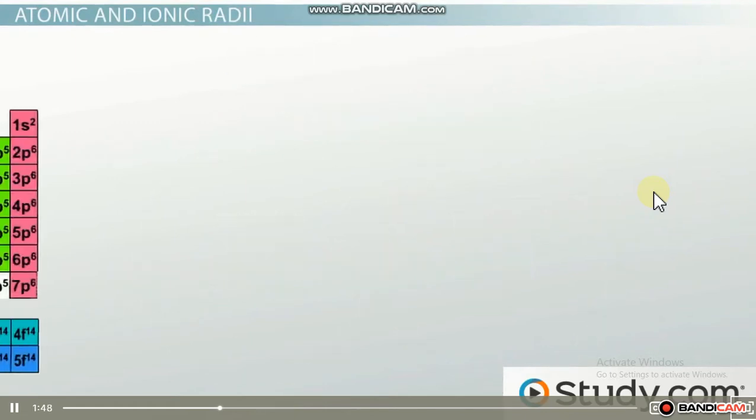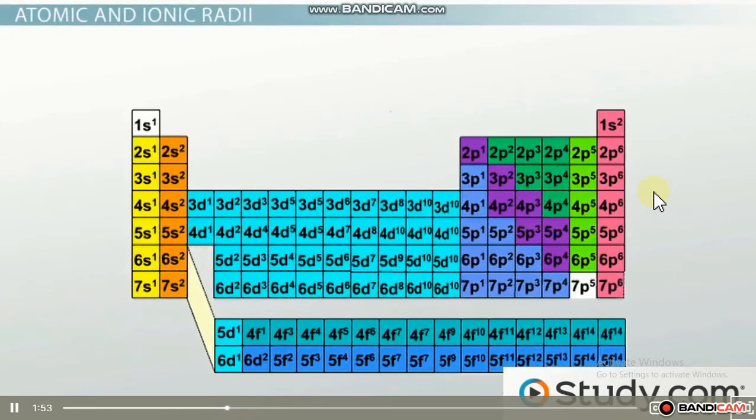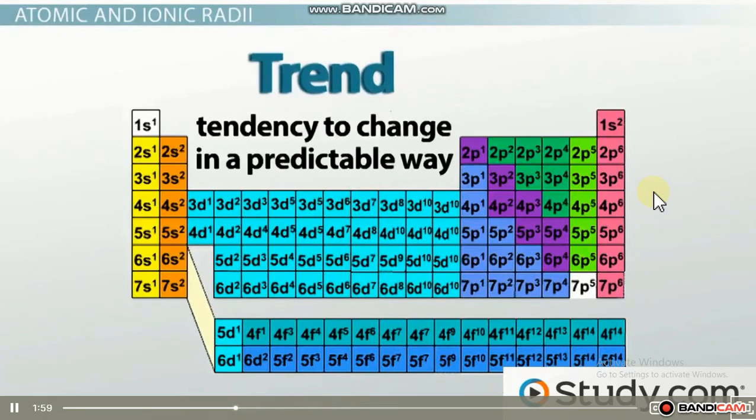The rest of this lesson will be focused on the trends that the atoms have in size as you move down a group or across a row on the periodic table. A trend is just a tendency to change in a predictable way. We can use these trends to compare the relative sizes of two different atoms on a table.